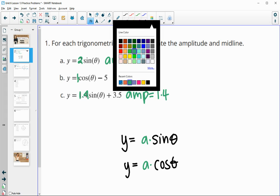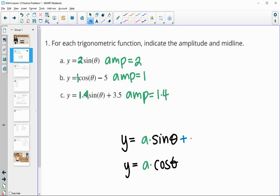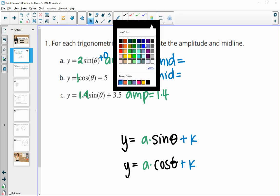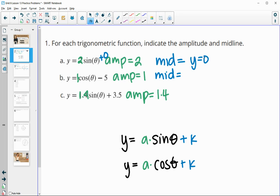The midline is a number added or subtracted to the end of the function, often called k when we write it generically. So in this case, your midline is 0 because there's nothing added at the end, so plus 0. In part b, your midline is negative 5, and we should write these as equations. So they're horizontal lines. The midline would be y equals 0 in the first one, y equals negative 5 in the second one, and the midline for this final one is plus 3.5. So y equals 3.5.